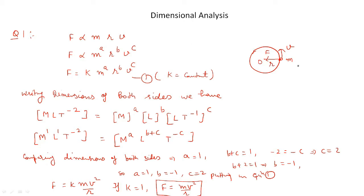Let us suppose a particle of mass M is moving in a circle with uniform velocity V. Let O be the center of the circle. The force acting on the particle M will be directed towards point O, so it is called the centripetal force. The centripetal force may depend upon the mass of the particle, its distance from the center of the circle, and its velocity.